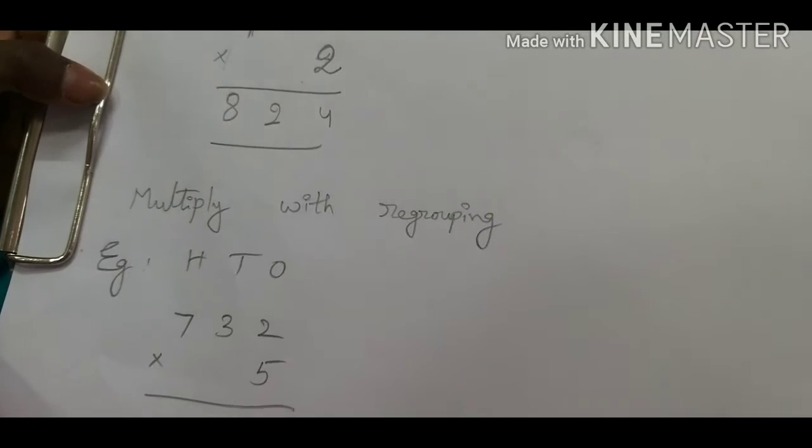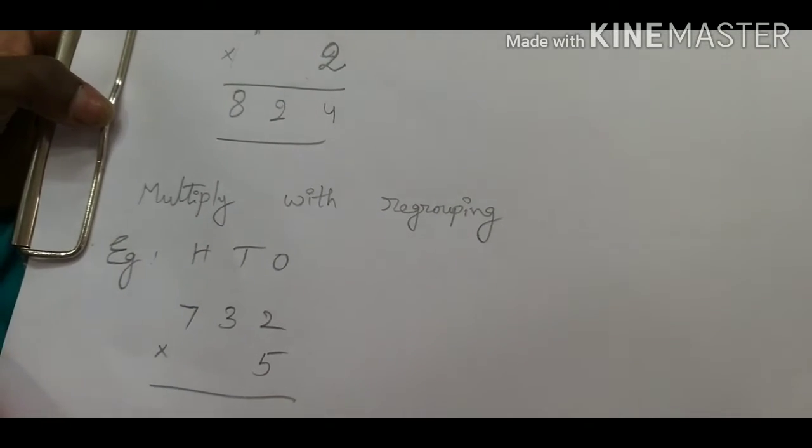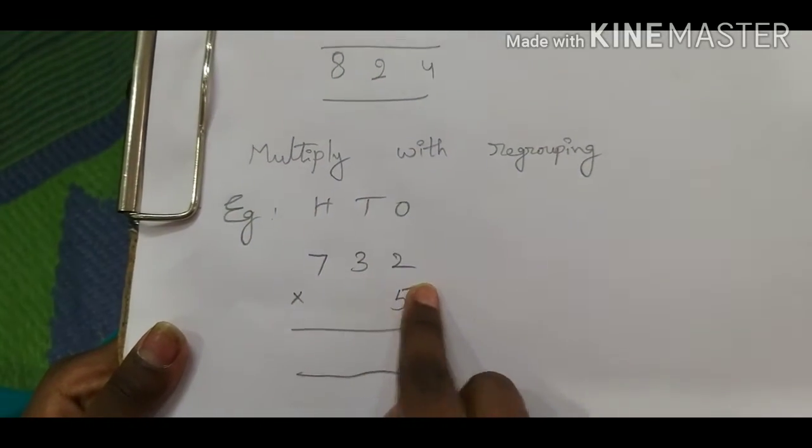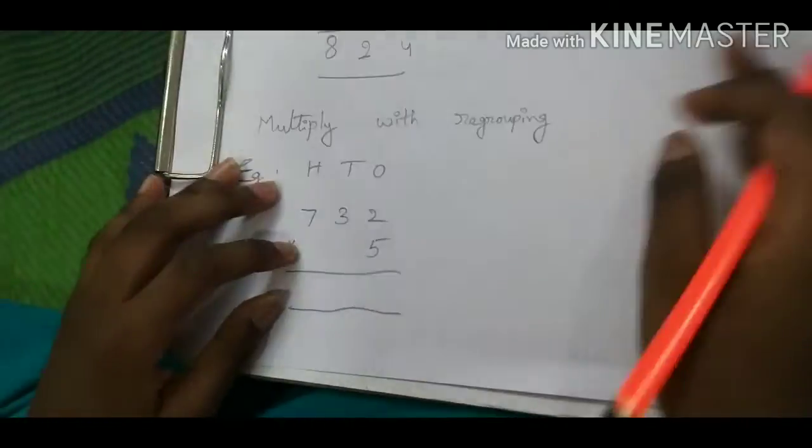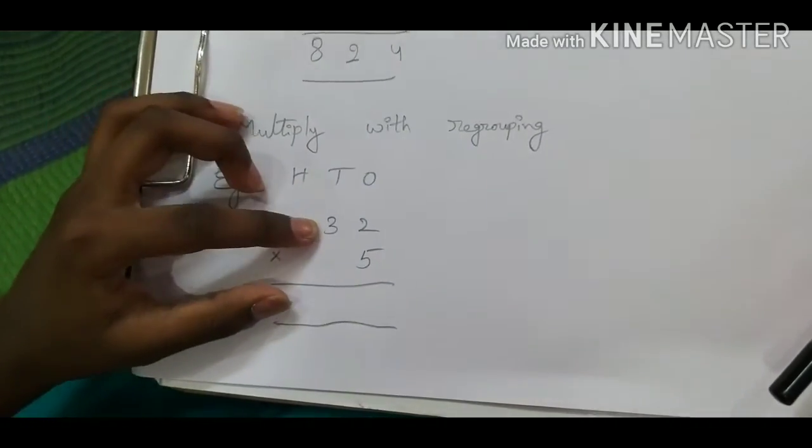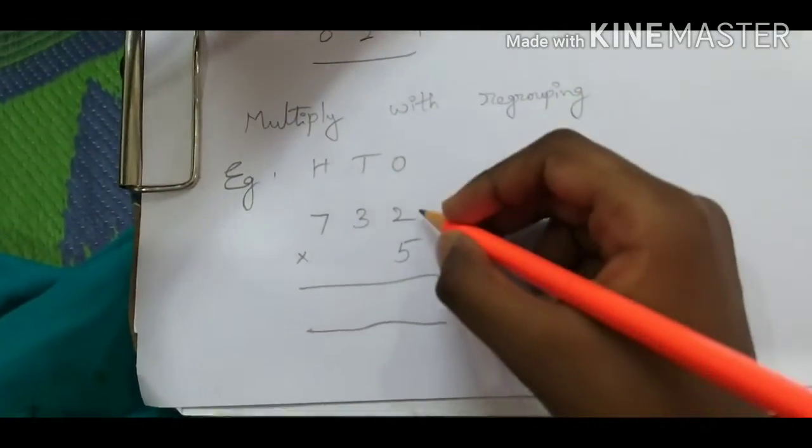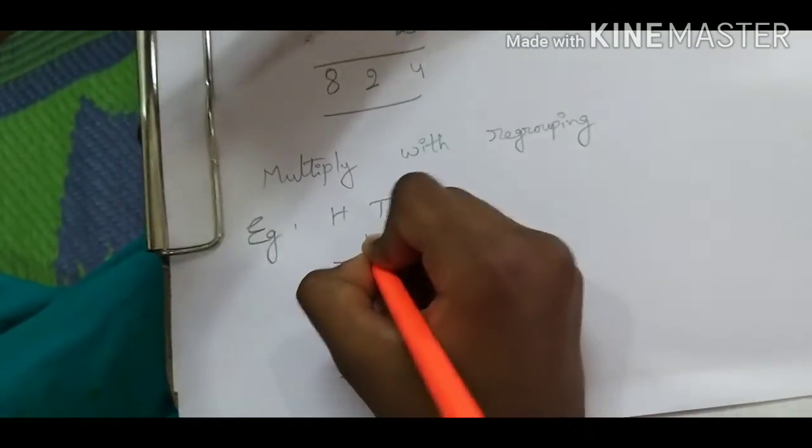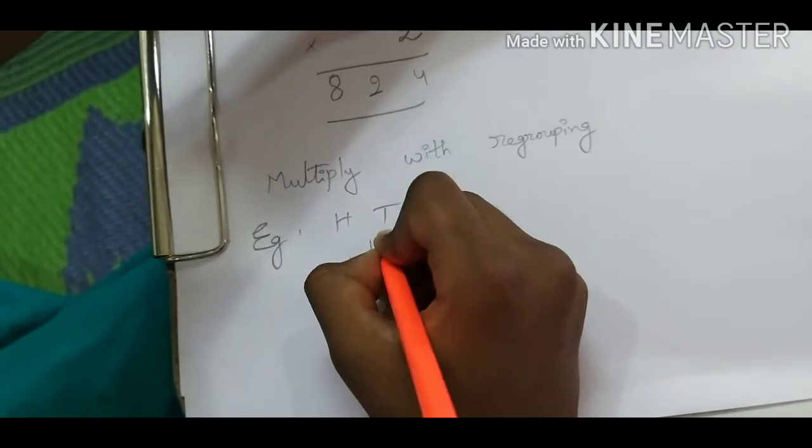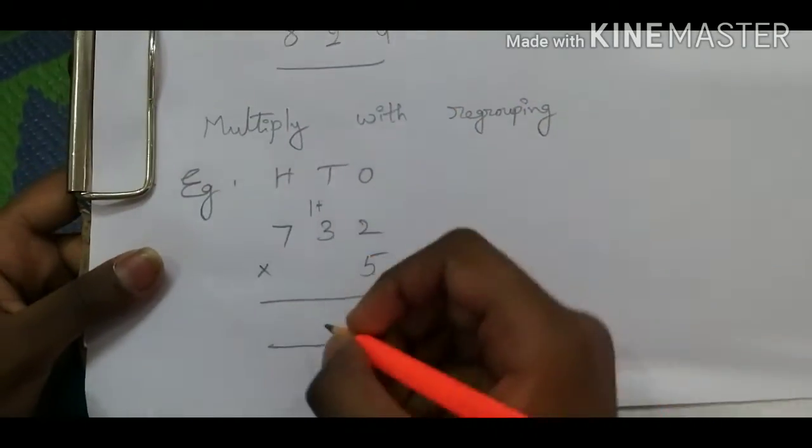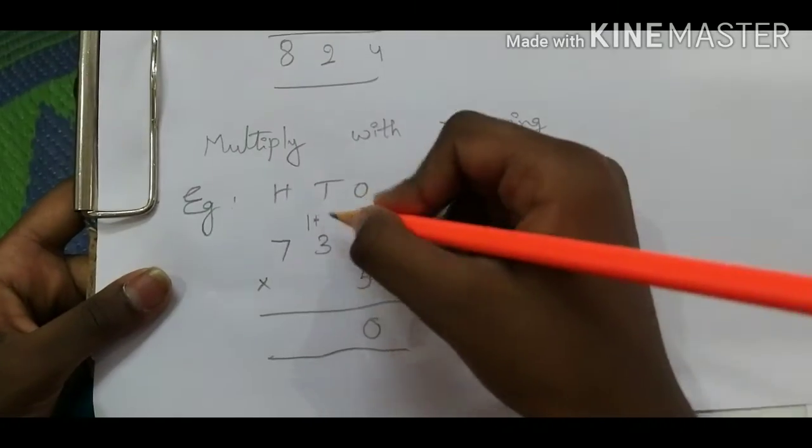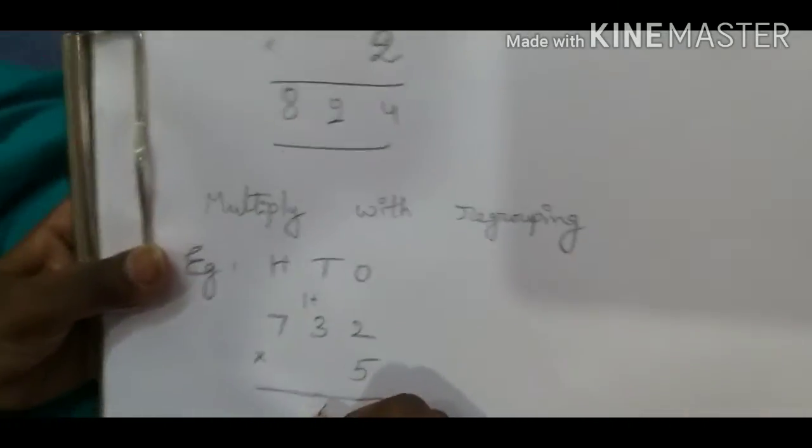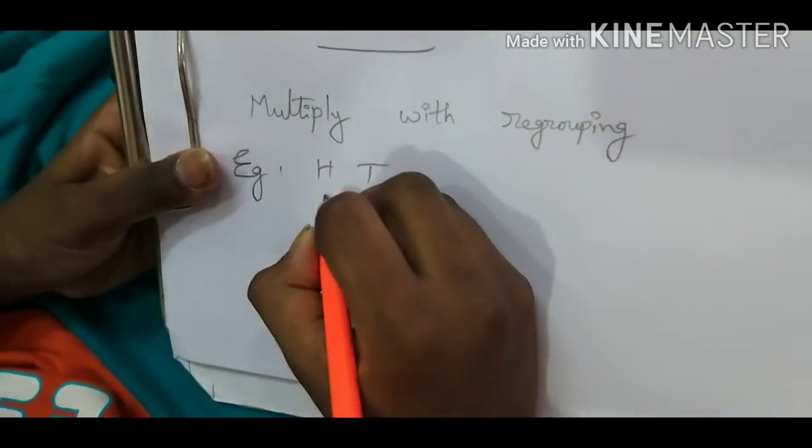Now coming to multiplication with regrouping. Example: 732 multiplied by 5. Now 5 times 2 is 10. 5 times 3 is 15. We have to add this one. Now we will get 16 but we need to write 6 here and 1 here.